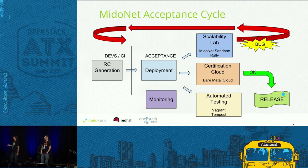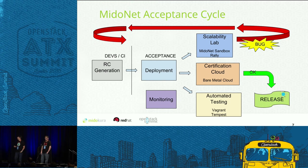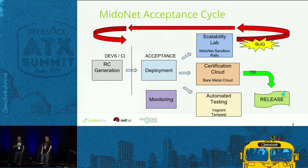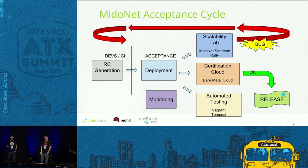This is the MioNet acceptance cycle we follow for an open source release. Once the release candidate is generated, we have three parallel deployments: the scalability lab, which is what I'm presenting today using this sandbox based on Docker and Rally for benchmarking; a certification cloud, which is a bare metal cloud to perform performance benchmarking on real hardware; and a last automated deployment that uses Vagrant to perform functional testing with Tempest. If everything's fine, we make the release.